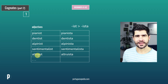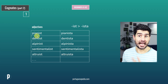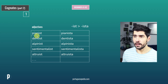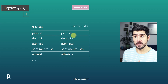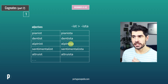Altruist — altruista. These can be used as adjectives and as nouns as well. When it comes to pronunciation, don't forget that we are stressing the next-to-last syllable. So: pianista, dentista, alpinista.